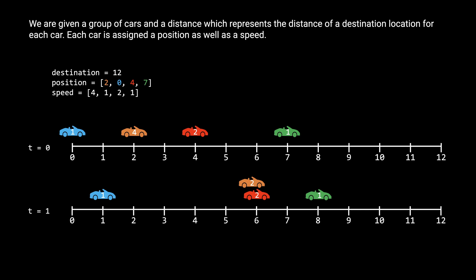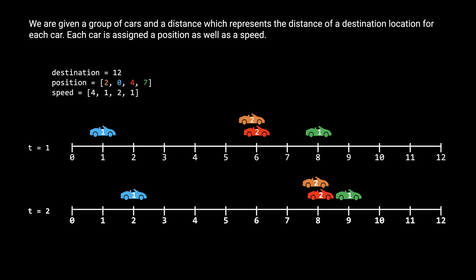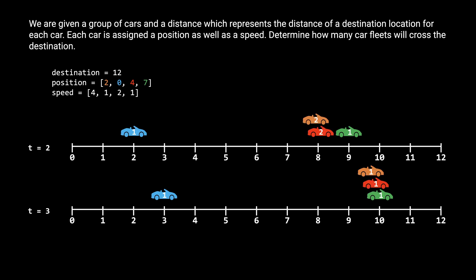Let's keep going. After another hour at T2, the blue and green cars have both moved forward one mile, and the red-and-orange fleet has moved forward by two miles — so we still have three car fleets. Moving forward another hour to T3, the green car and the blue car have moved forward by one mile, but now the red-and-orange fleet has caught up to the green car. The red, orange, and green cars combine to form a single fleet, and the red and orange cars are now limited to the green car's speed of 1 mph for the rest of the journey. At T3 there are now only two car fleets: the green-red-orange one and the blue one.